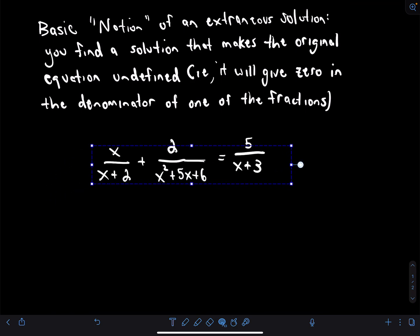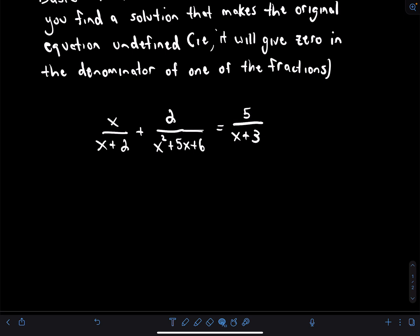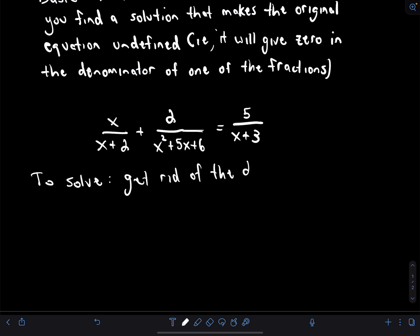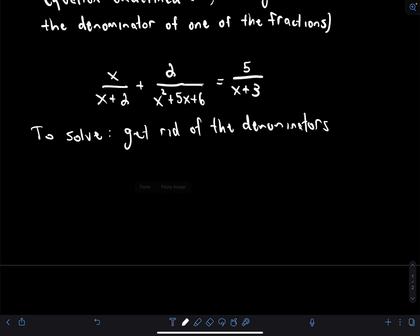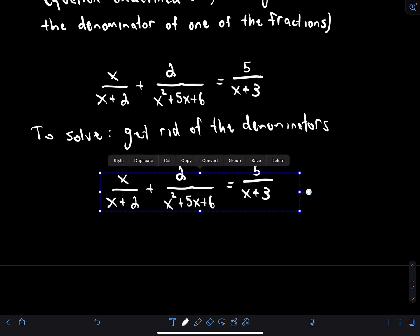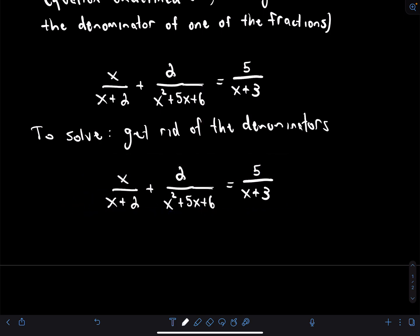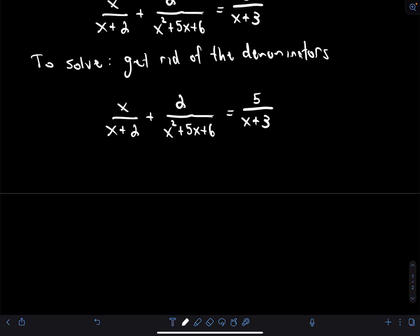To solve rational equations, the first step is simply to get rid of the denominators. We're going to take this equation and do a little bit of algebra so that we get an equation that no longer has fractions in it.